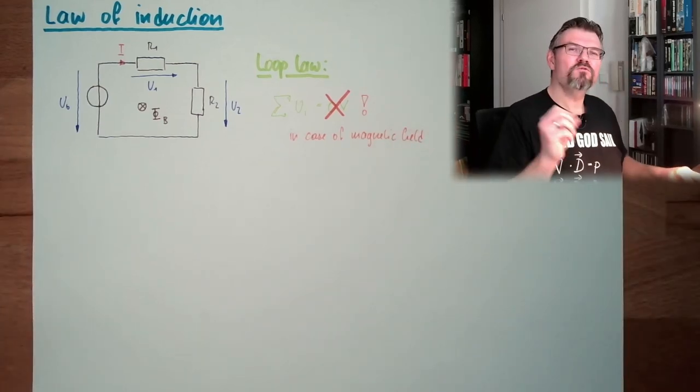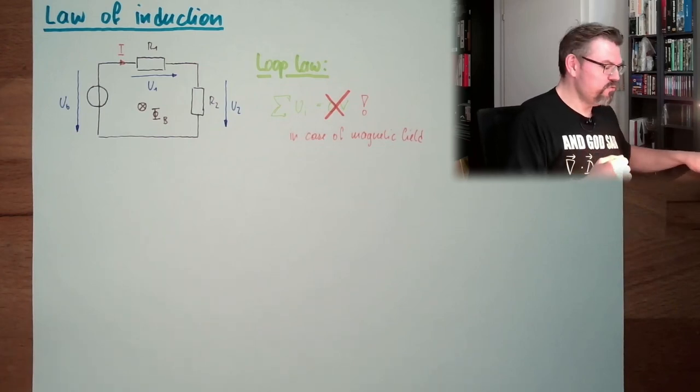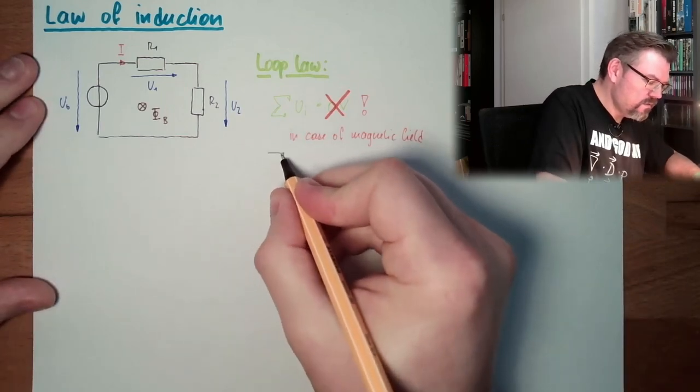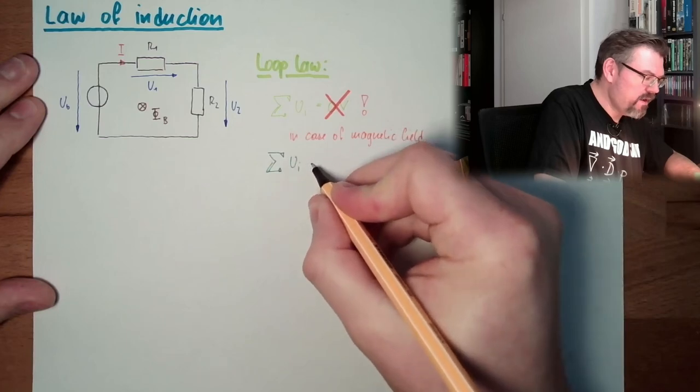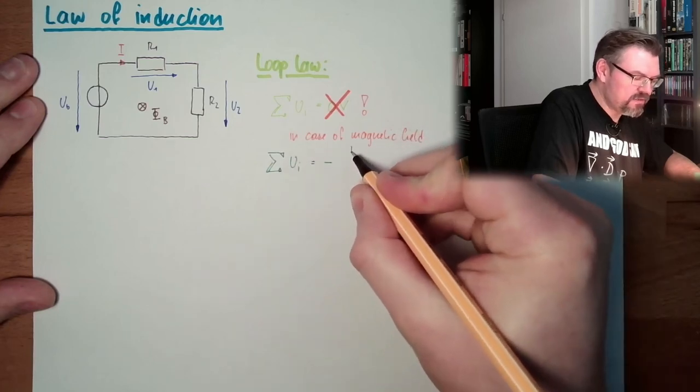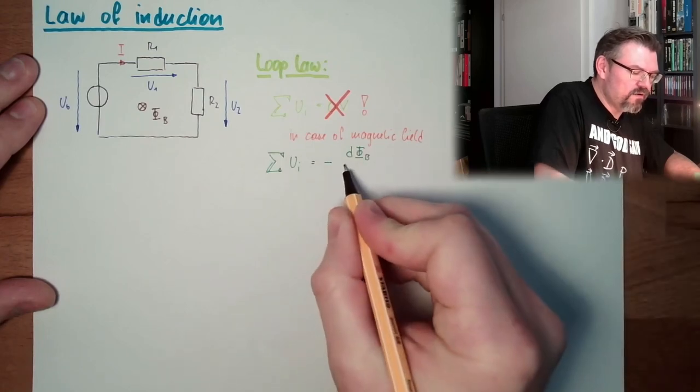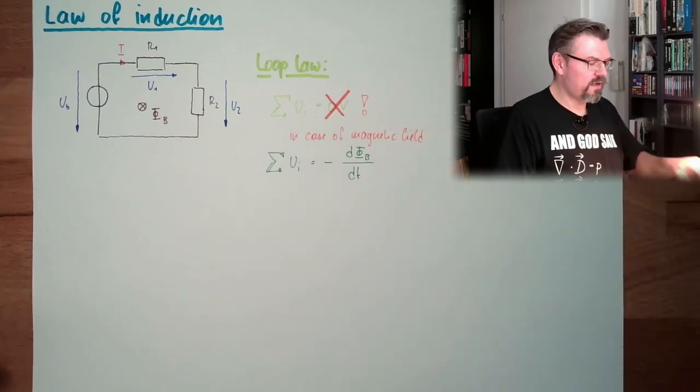In case of magnetic field, we have to substitute this. And the substitution is the sum of all UIs is minus the change rate of the linked flux over time.